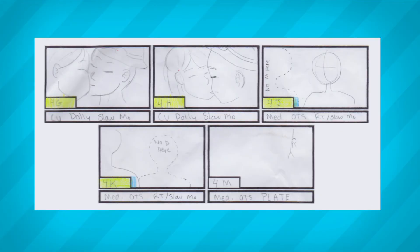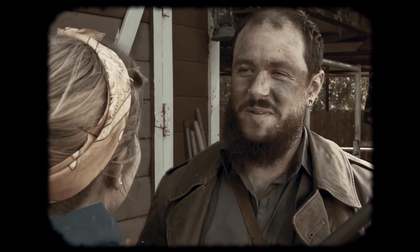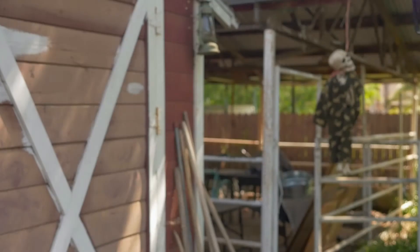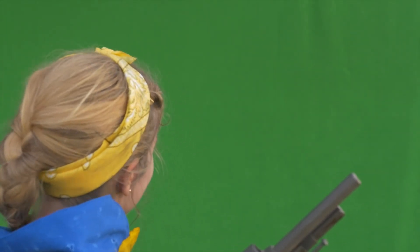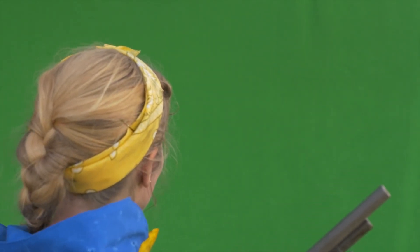Storyboarding can be essential when your film requires CG or special effects. Storyboarding can help you plan out these types of shots ahead of time and identify which type of effect or extra shots are needed to achieve the final shot — like in this example that required a plate, a shot of the actor on green screen, and a clean shot of the second actor to complete the over-the-shoulder shot.